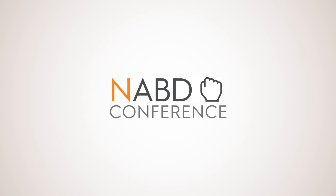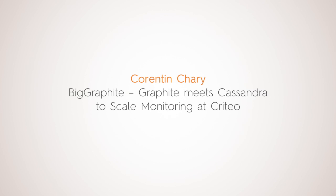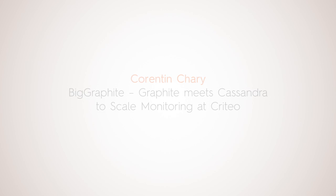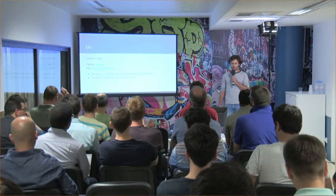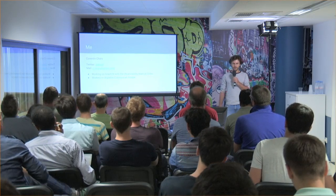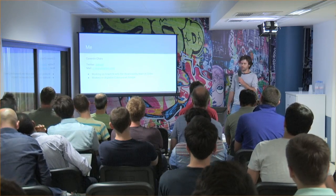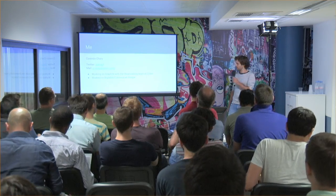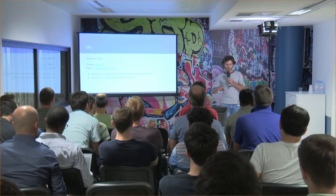Welcome to 'Scaling Graphite at Criteo.' My name is Corentin. I work in the observability team at Criteo, dealing mostly with metrics and logs, and I work on Graphite. Before that, I used to work on Bigtable and Colossus at Google, so I have a strong background in file systems and databases. Today, since it's a big data conference, we're going to talk about Big Graphite.